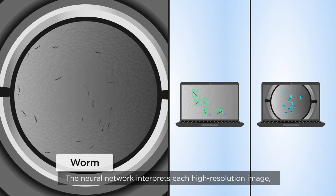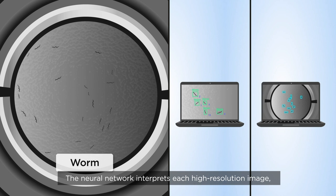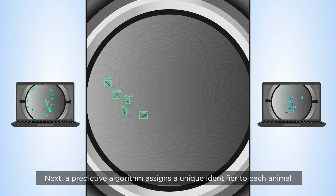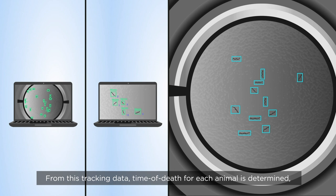The neural network interprets each high-resolution image in order to determine the position of each individual animal in the field of view. Next, a predictive algorithm assigns a unique identifier to each animal and tracks its location over time.